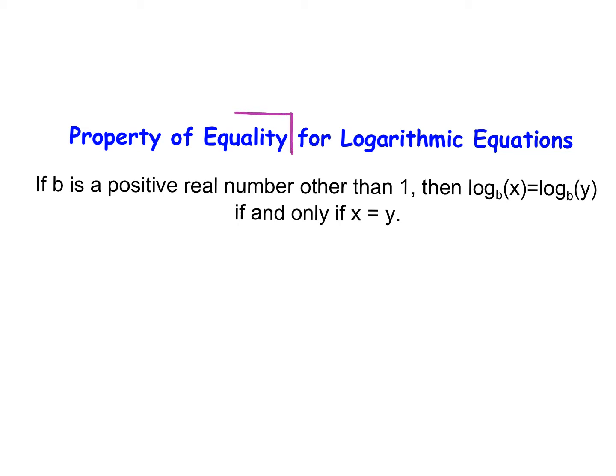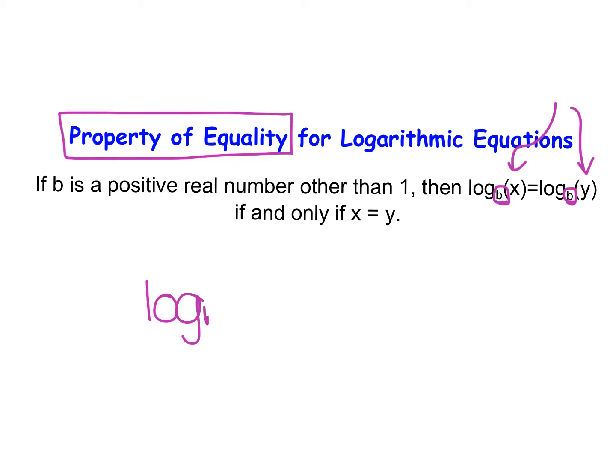The first involves the property of equality. This property states that if b is a positive real number other than 1, then log base b of x equaling log base b of y only happens if x is equal to y. Essentially, if you have log base b on both sides with the same log base, and you have something inside of the log, you have the same log base on each side.